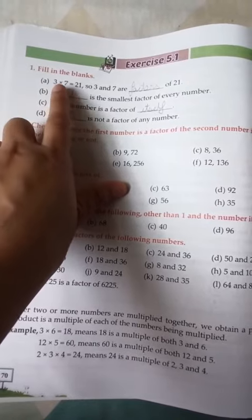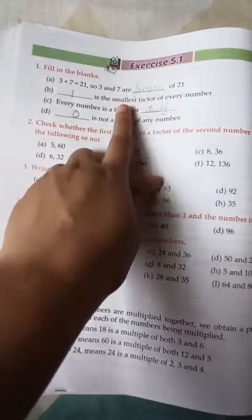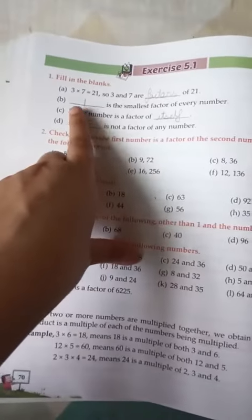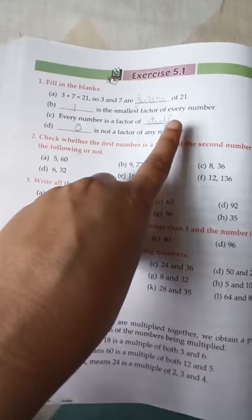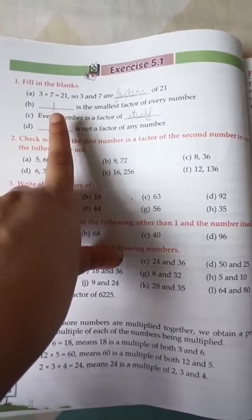The first question is 3 into 7. 3 sevens are 21, so 3 and 7 are factors of 21. Understood? The smallest factor of every number - so write here 1. 1 is the smallest factor of every number. If you take any number, you will see that 1 is the factor of each and every number.